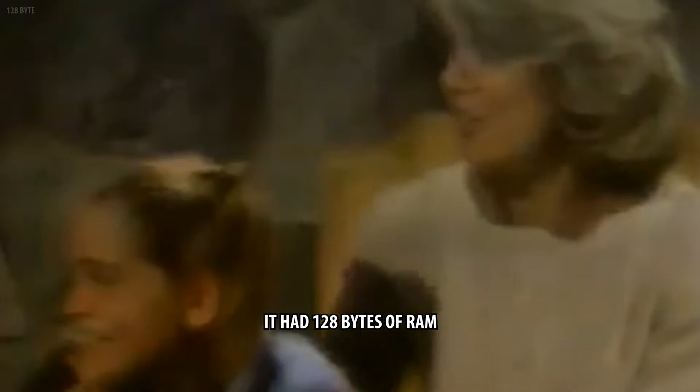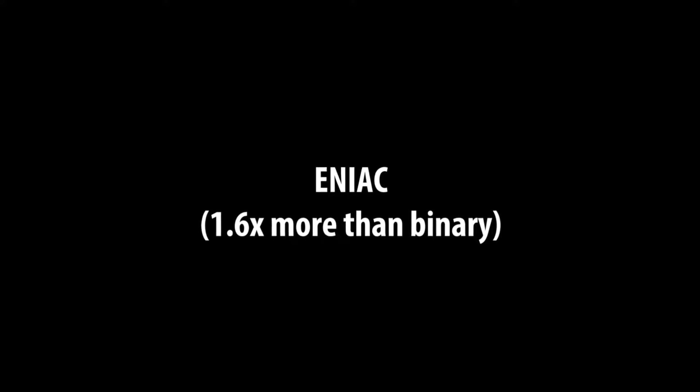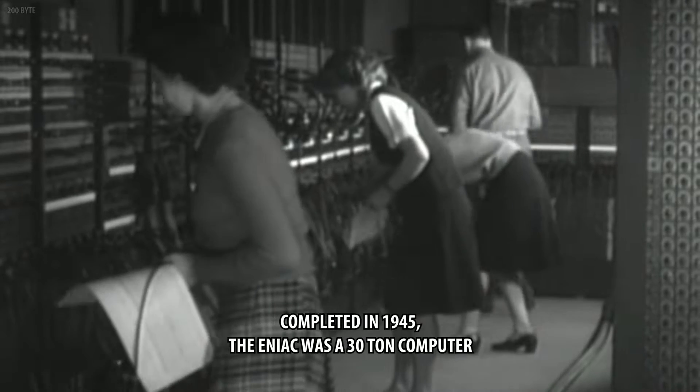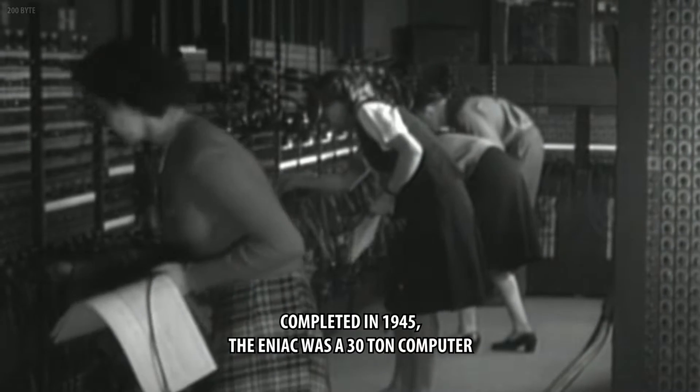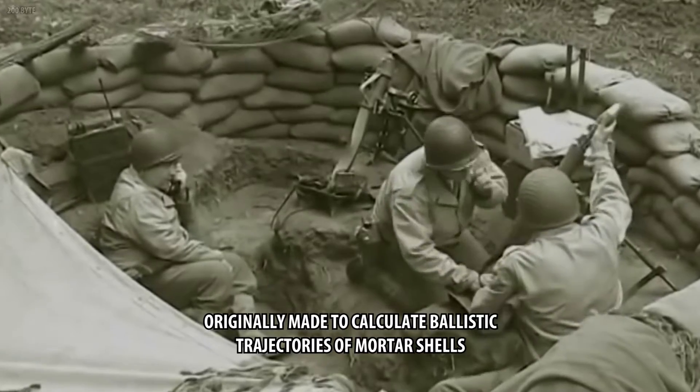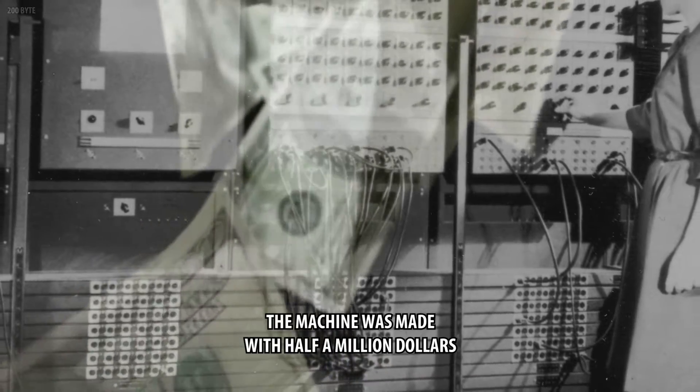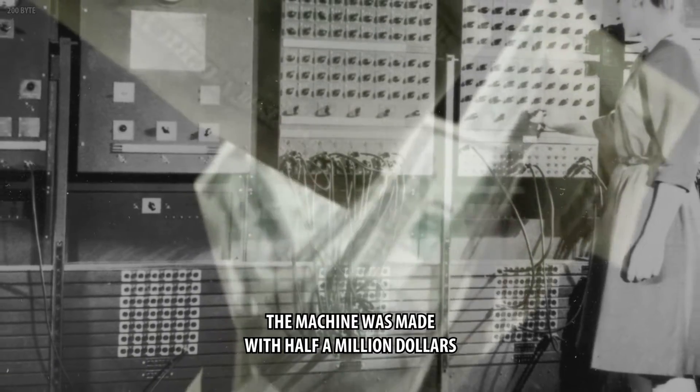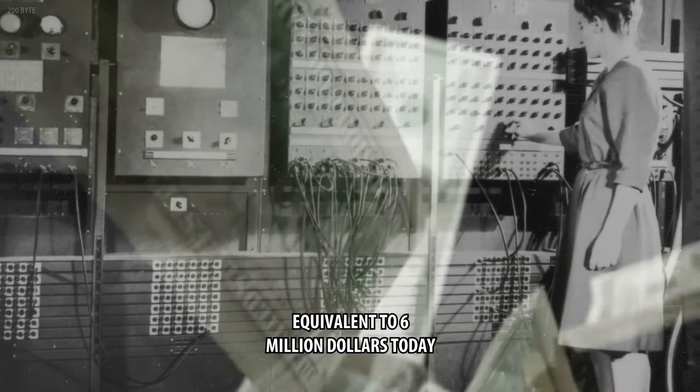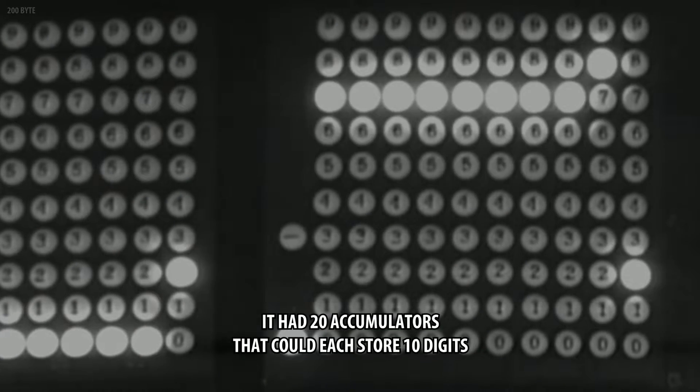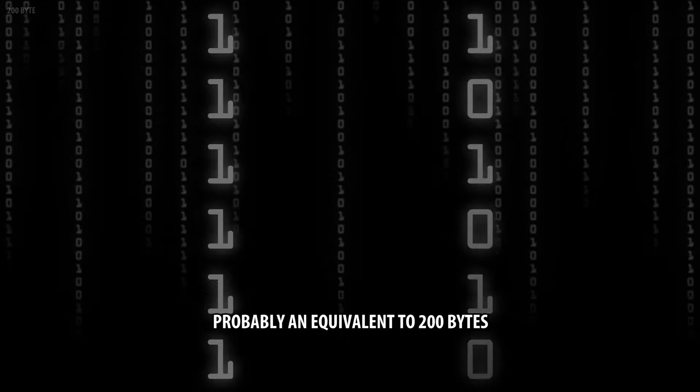ENIAC, 1.6 times more than binary. Completed in 1945, the ENIAC was a 30-ton computer originally made to calculate ballistic trajectories of mortar shells. The machine was made with half a million dollars, equivalent to 6 million dollars today. It had 20 accumulators that could each store 10 digits, probably an equivalent to 200 bytes.